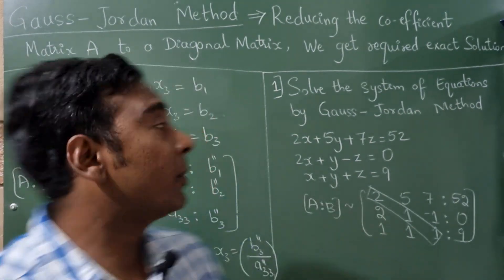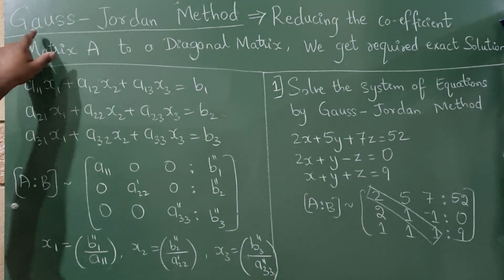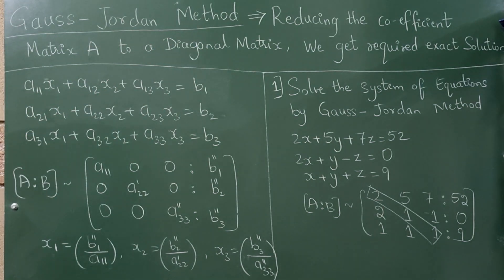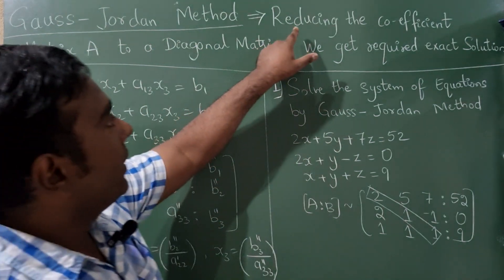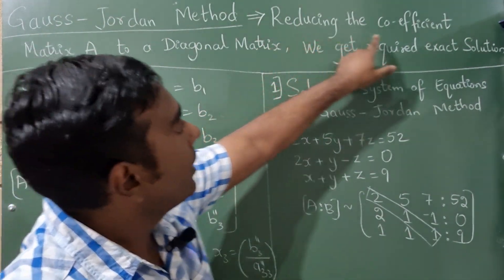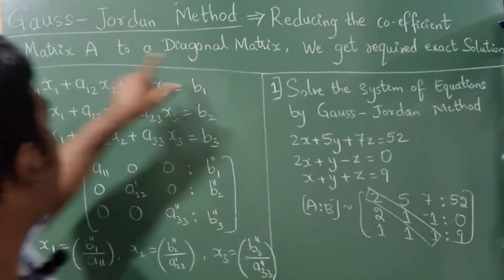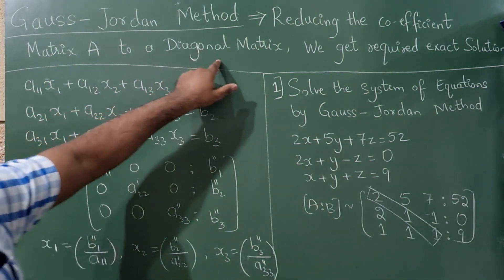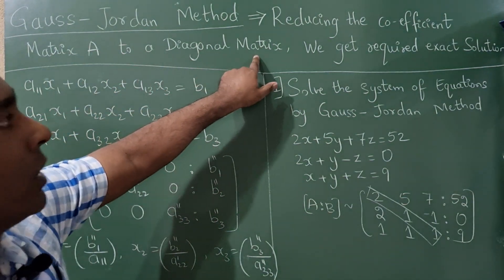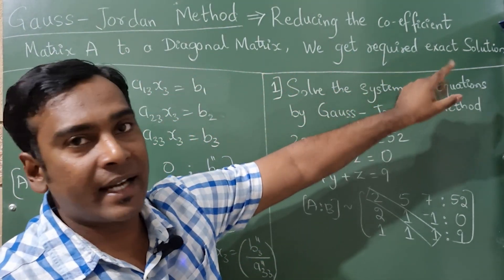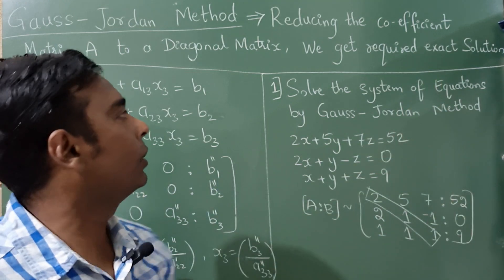Hello everyone, today I am going to explain the Gauss-Jordan method. The main aim is to reduce the coefficient matrix A to a diagonal matrix so that we get the required exact solution.